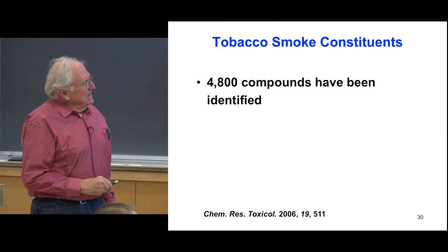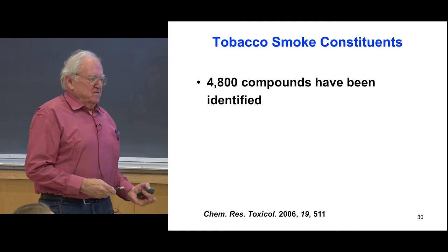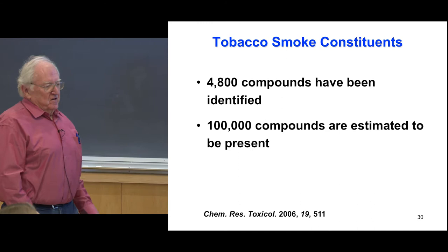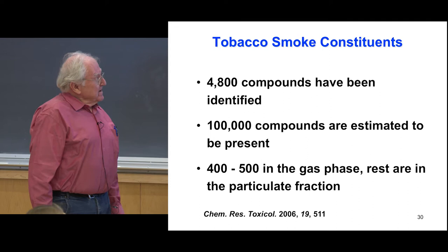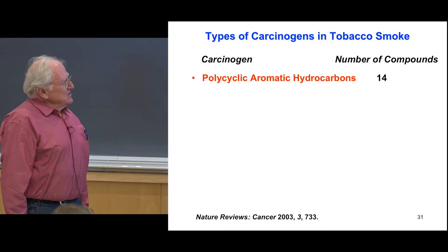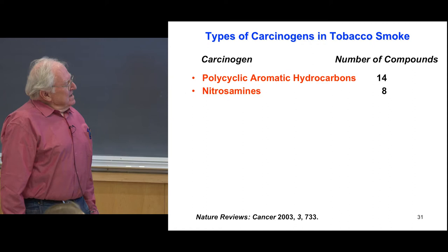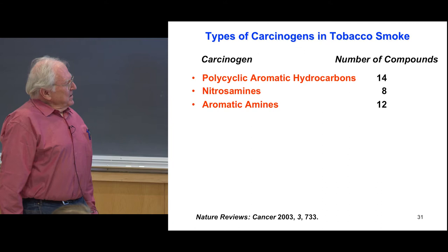Tobacco smoke contains thousands of compounds. 5,000 compounds have been identified alone, and it's estimated there are 100,000 compounds in tobacco smoke. If you burn anything, you get thousands and thousands of compounds. Most are in the gas phase, but some are in the particulates. We're going to talk a lot about polycyclic aromatic hydrocarbons — these were first discovered to cause cancer in animals. Nitrosamines are also in tobacco smoke, aromatic amines, and lots of other things we've talked about in this course.